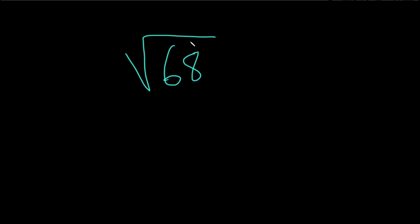Simplify the square root of 68. So in a problem like this, the first thing you want to do is try to factor this in a way that allows you to get what's called a perfect square. So we're looking for a number that when you take the square root of that number, you get a whole number.